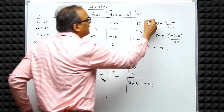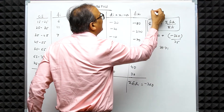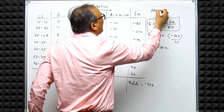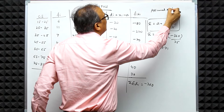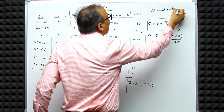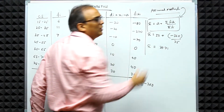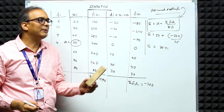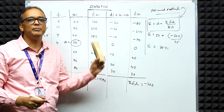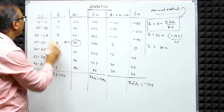Both the Direct Method and the Assumed Mean Method give the same result: mean = 39.71. We have now covered both methods for finding the mean.